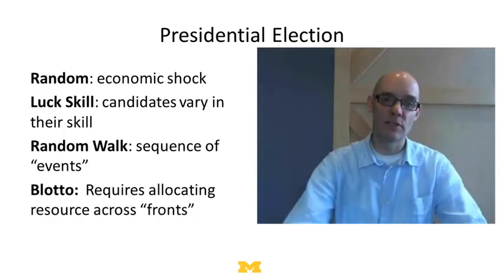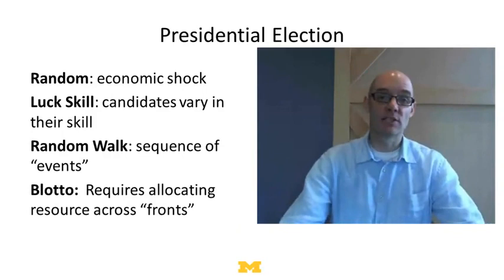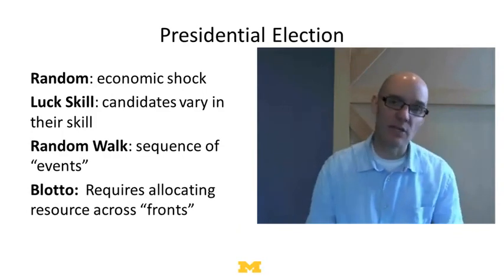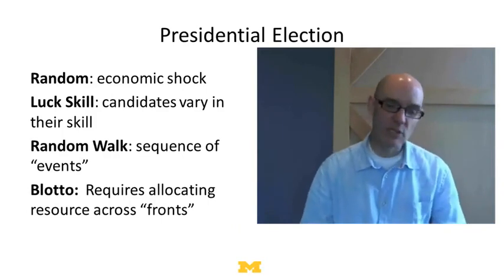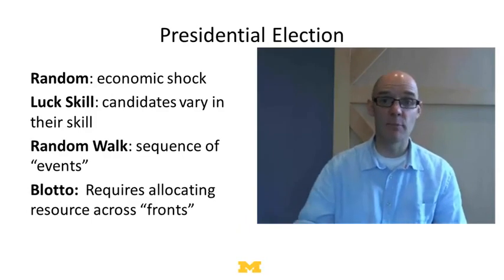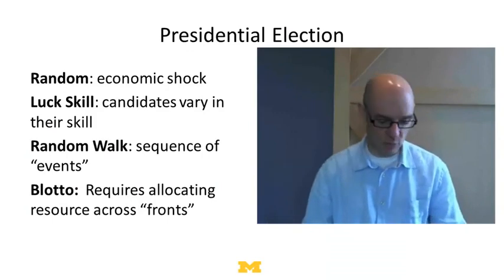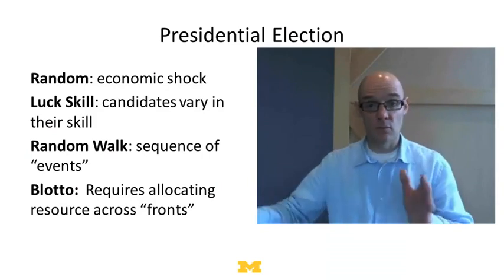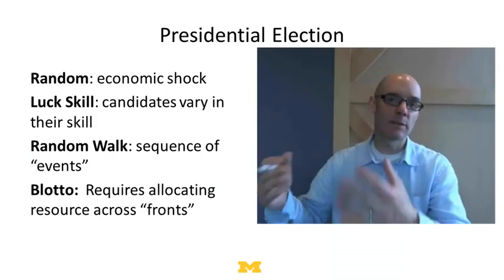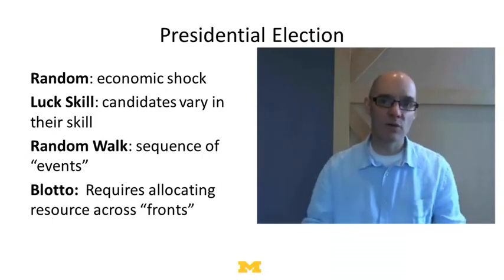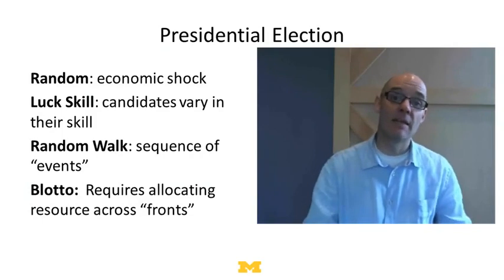Let's take the U.S. presidential election as a particular case and see what these models tell us. The random model says the winner depends on random economic shocks — there's some evidence for this, but it probably doesn't fully capture things. The skill plus luck model says candidates have skill — ability to communicate, past experience — plus economic shocks, and there's evidence that better candidates do seem to win. A random walk model says it's not just one economic shock but a whole bunch of random events: world economy, international relations, domestic issues, social movements all adding up to determine the incumbent party's popularity.